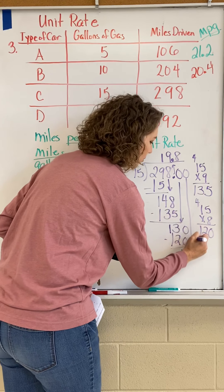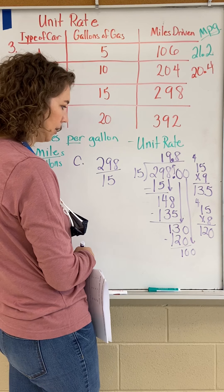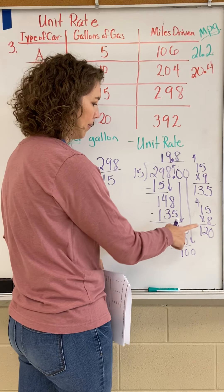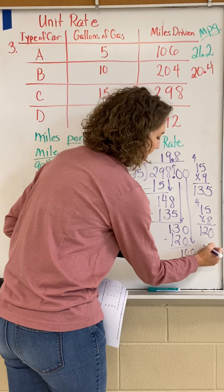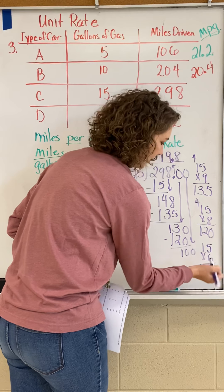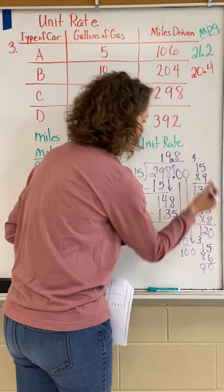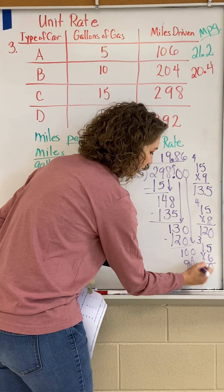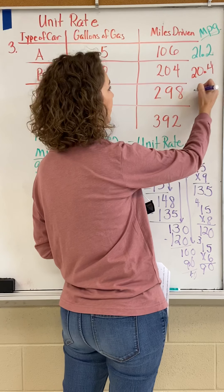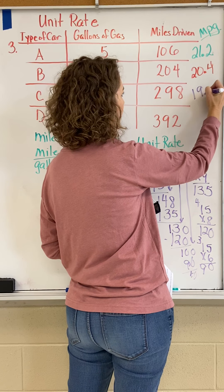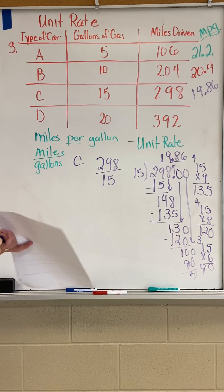Keep going — add one more zero. 15 times 6 is 90, so 15 times 6 goes into 100 six times — that's 90, remainder 10. We'll round it and stop there. Car C gets about 19.86 miles per gallon.